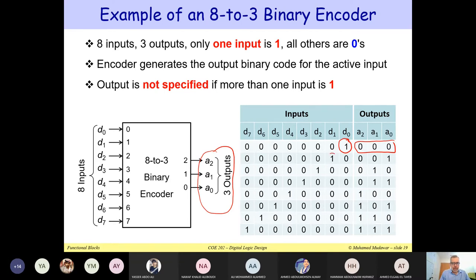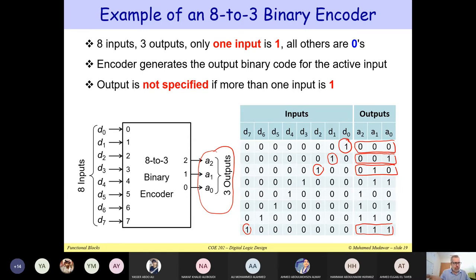If input D1 is equal to one, you get the output 0, 0, 1, indicating that D1 is one. If D2 is equal to one, you get 0, 1, 0 — which is the number 2 in binary — indicating that input 2 is active. You can go all the way to D7: if D7 is equal to one, you get the output 1, 1, 1. That's the truth table for a binary encoder with eight inputs and three outputs.